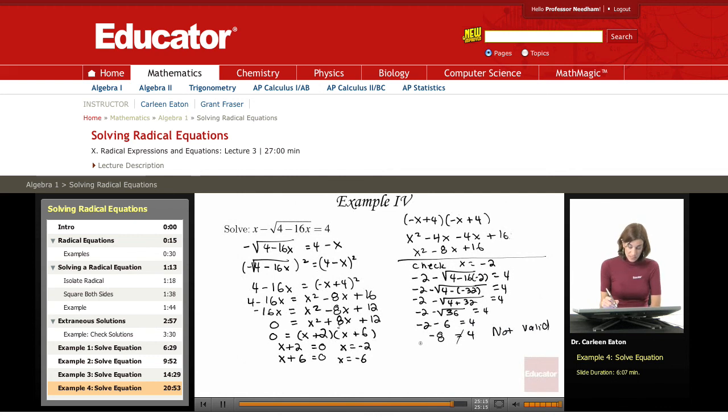I need to check my second solution, and that second solution is negative 6. So I'm going to go ahead and try that. Negative 6 minus the square root of 4 minus 16 times negative 6 equals 4. That's going to give me negative 6, the square root of 16 times negative 6 is 96.